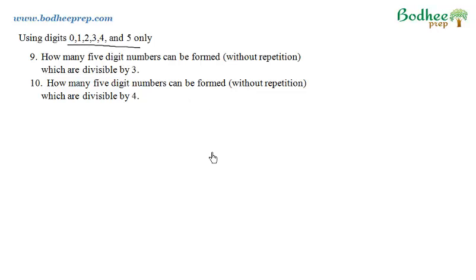Now here we have to use the digits 0, 1, 2, 3, 4, and 5. That is 6 digits. These are the two questions. Question number 9 says how many 5 digit numbers can be formed without repetition which are divisible by 3.